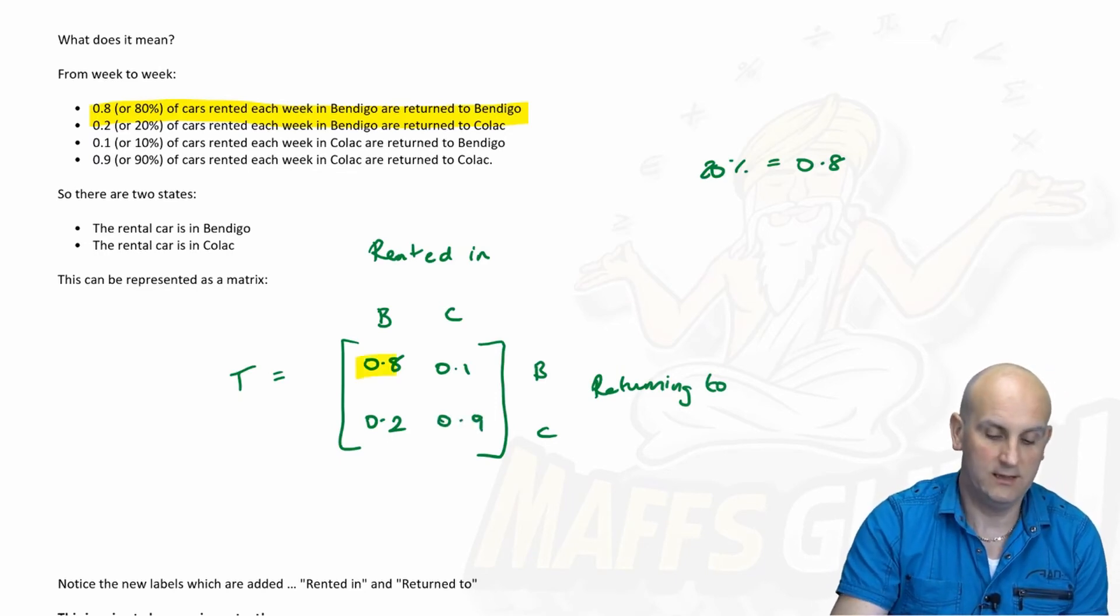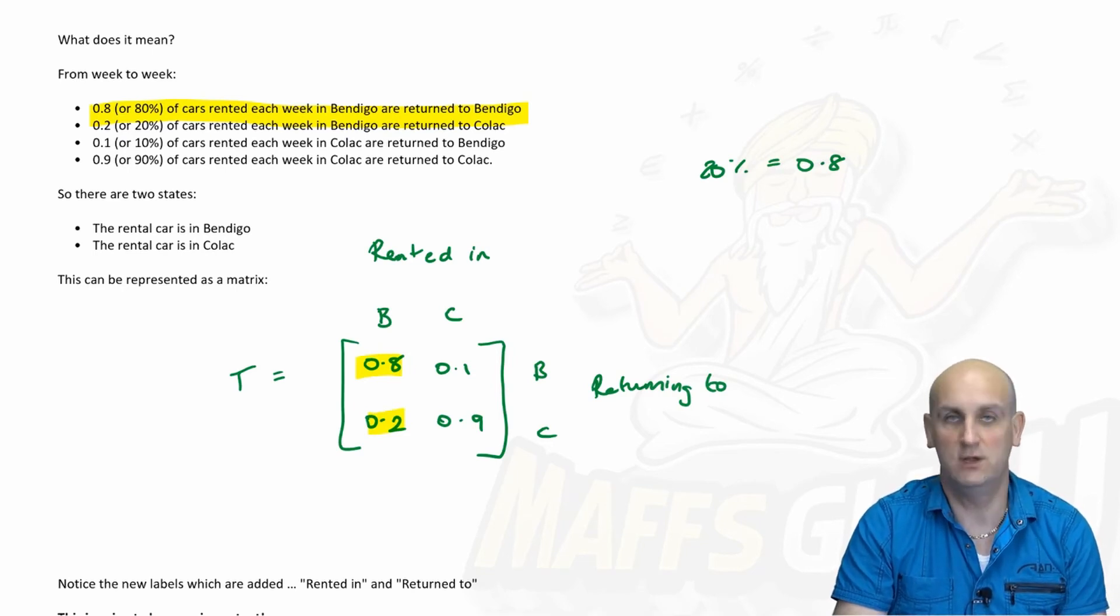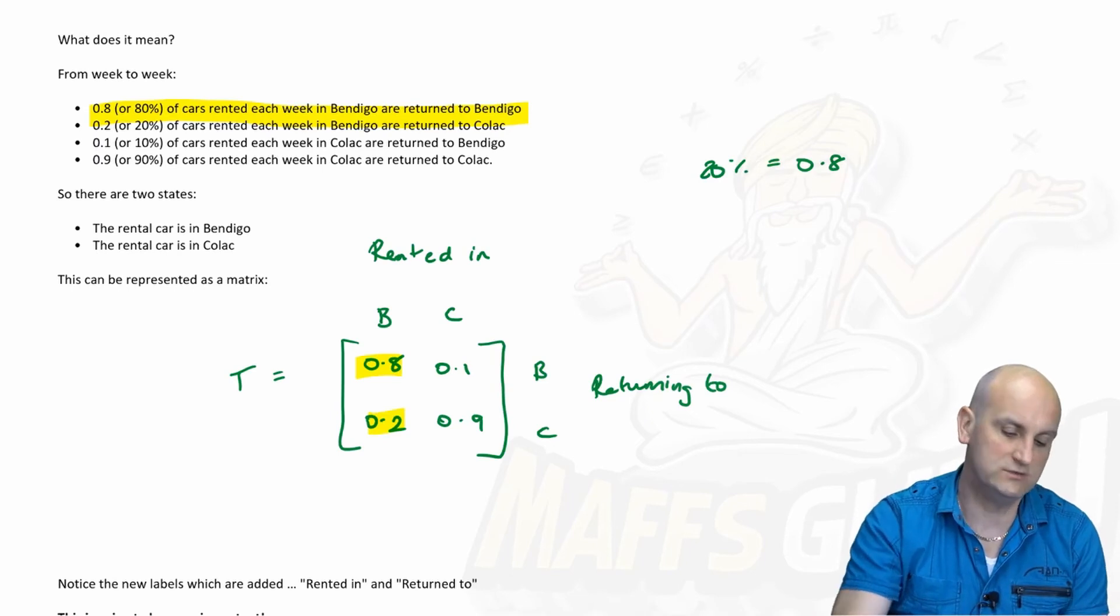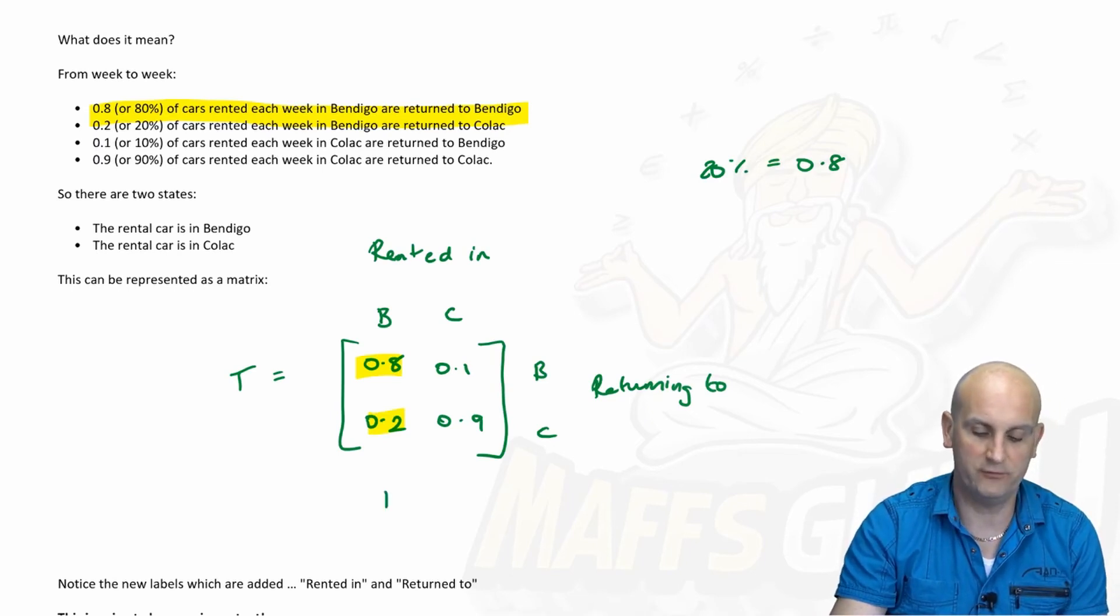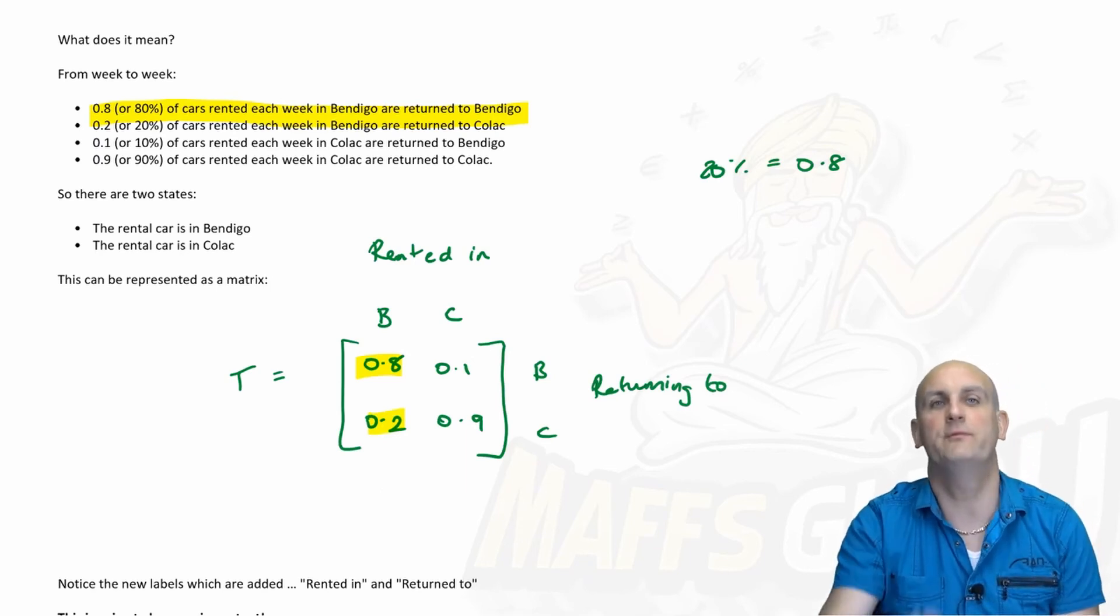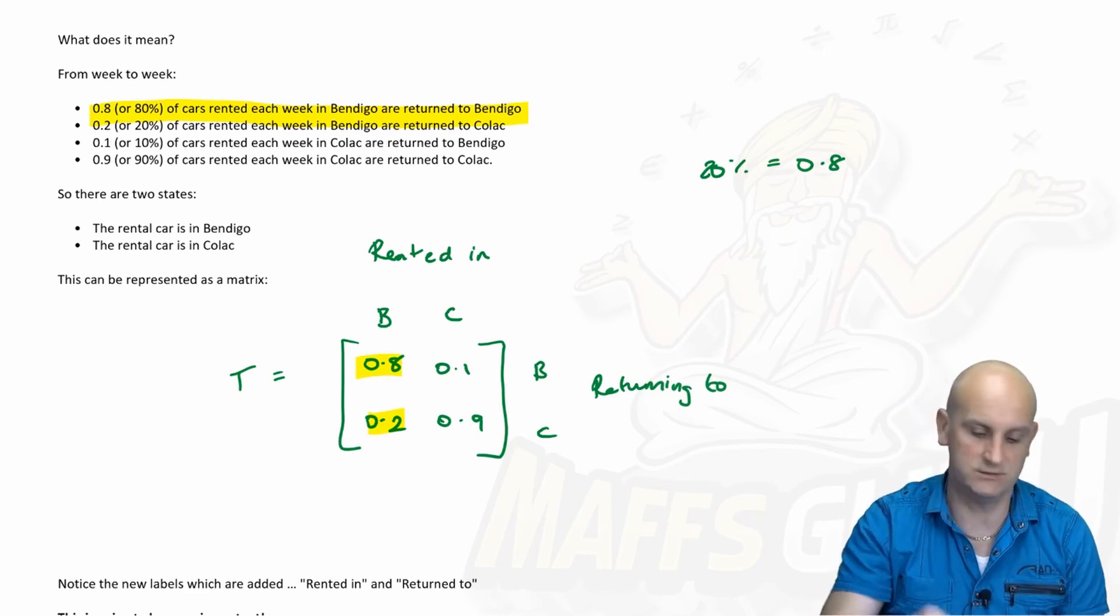Now something really important to note here is what each column values adds to. So if I take each of the values in each of the columns and add them together, what does it add to? Well 0.8 and 0.2 is 1. 0.1 and 0.9 is also 1. So that's one of those interesting trick things that's always on an exam to make sure that you understand that transition matrices, their columns must add to 1.